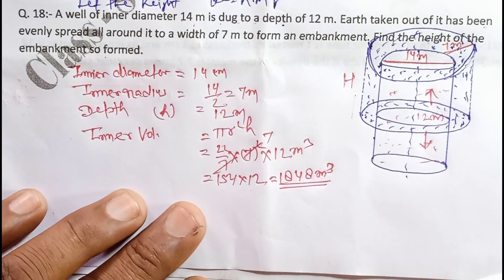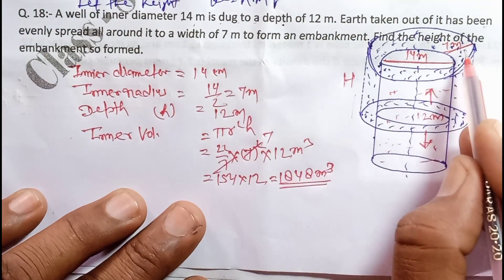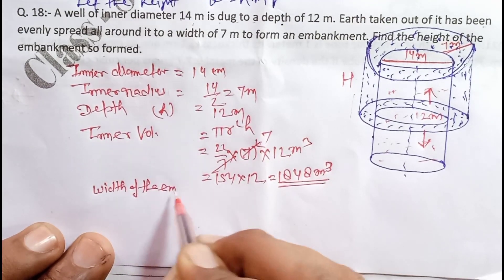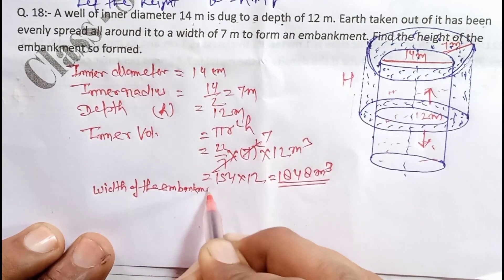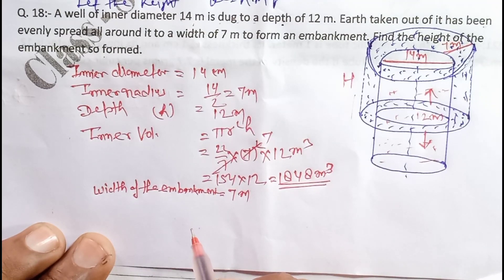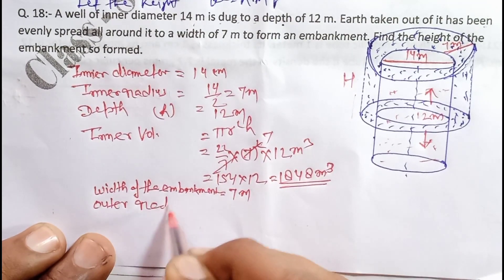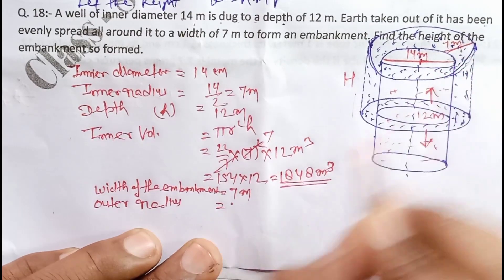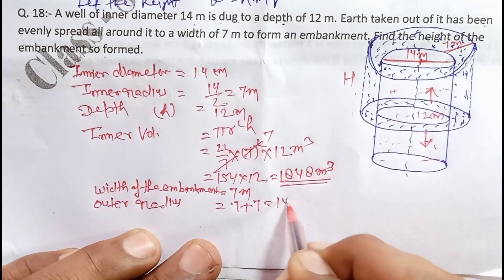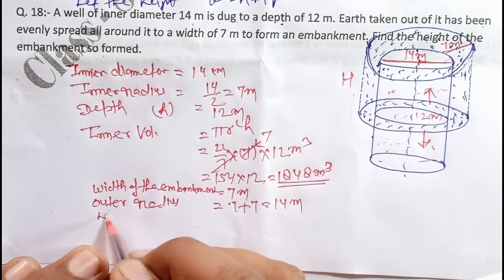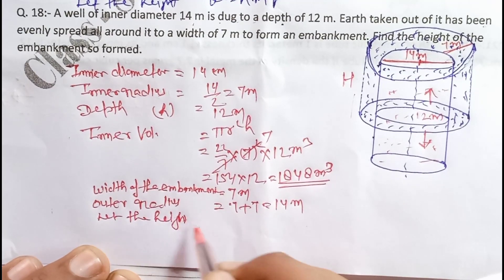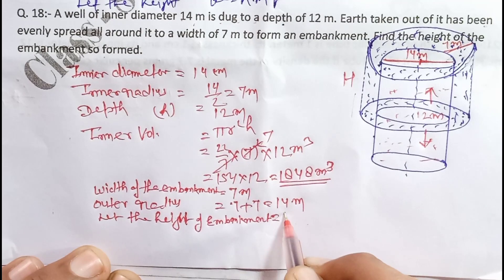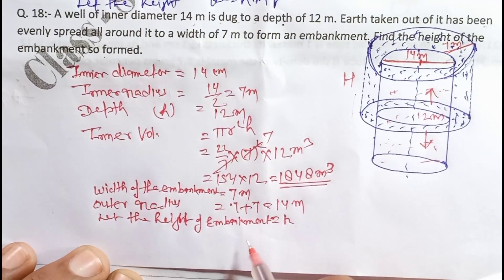Now moving ahead — note down the width of the embankment: width = 7 meters. Outer radius = inner radius + width = 7 + 7 = 14 meters. Let the height of the embankment be equal to h.